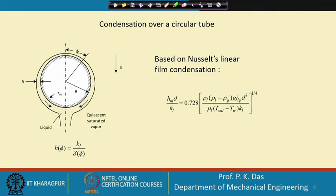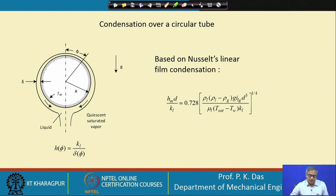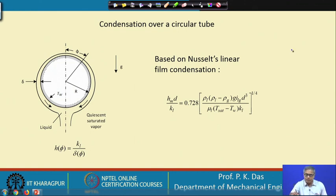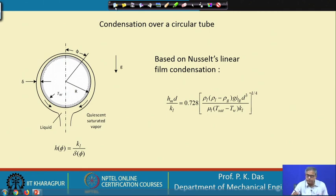Going back to the previous lecture — this was the last slide. Here you see that Nusselt film condensation theory was used. Let me tell a few things regarding this and then we'll return to the current lecture. The Nusselt film condensation theory is a very unique theory in heat transfer. What Nusselt did was first develop this theory for a vertical flat plate.